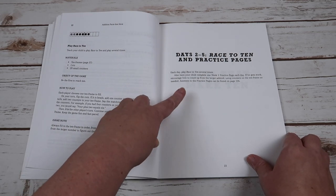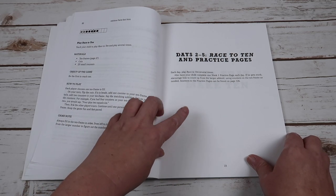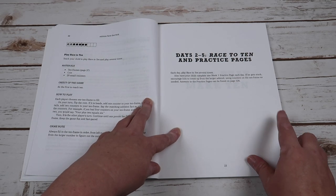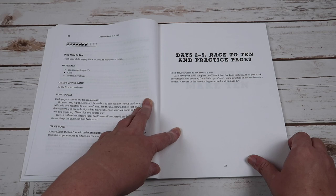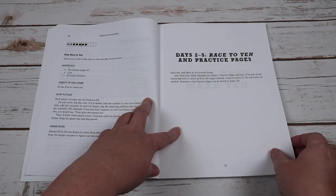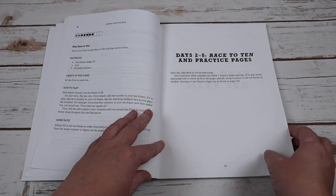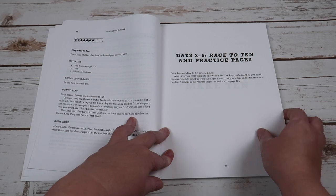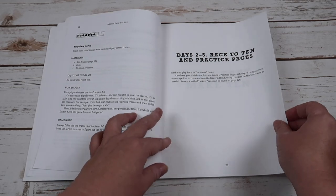So each day play race to 10 several times. Also have your child complete week one practice page each day. If he or she gets stuck, encourage him to count up from the larger addend using counters on the 10 frames as needed. Answers to the practice pages can be found on page 126. So the answers are included in here. And she also gives you an in case they get stuck, this is what you should do type of thing.